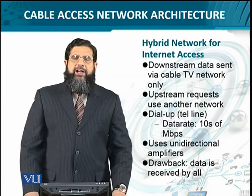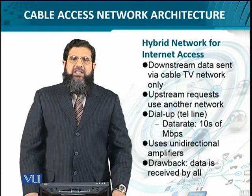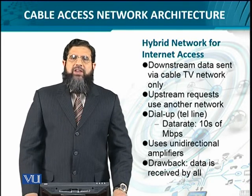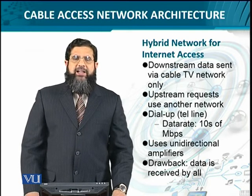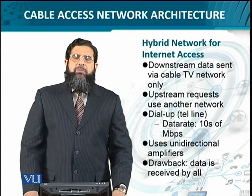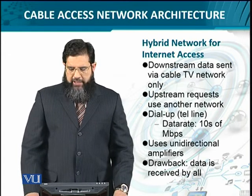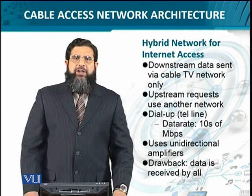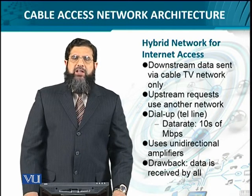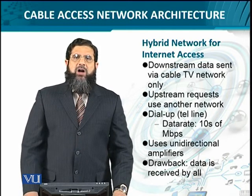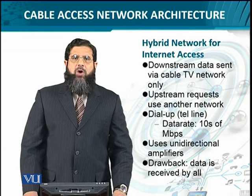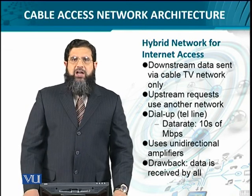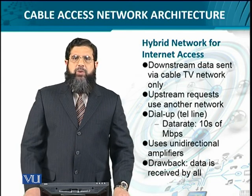There was a downside or limitation of this mechanism. Since the inherent nature of cable TV is that if a single TV channel is transmitted on the cable from the head end to the user side, it is broadcast to all the users. Likewise, once the data transmission was sent downstream, it would also be delivered to all users. So a mechanism would be required to secure it, to make sure that unintended users would not receive it. Advanced versions of providing internet over these coaxial cables were then thought about, which we'll study in subsequent modules.